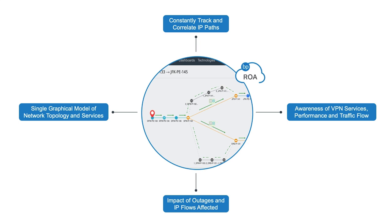All this data is stored, and with a simple swipe on the timeline, a user can go back in time to view past events as they happened for post-mortem incident analysis. Let's look at an example use case of where the Blue Planet multi-layer network solution also acts as a network automation platform.